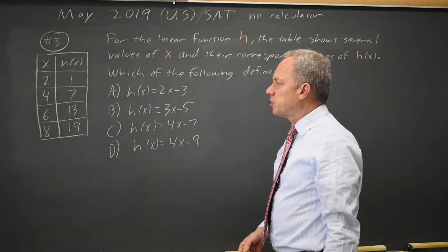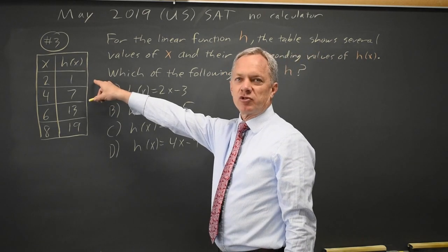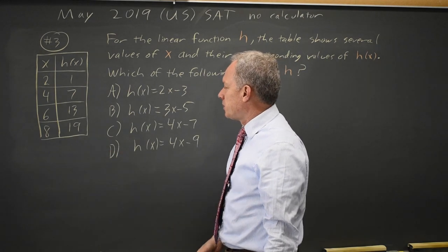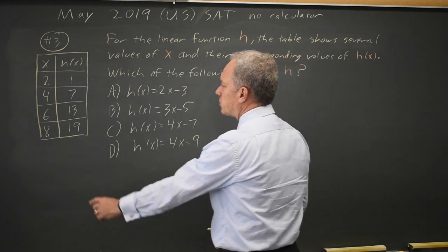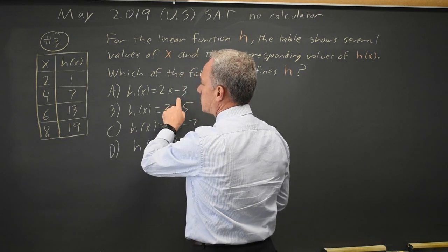Since I have choices, I'm going to try plugging in values. And since I know College Board likes to make the first point work for most of your choices, I'll usually plug in the last point. So if I try 2 times 8 is 16 minus 3 is 13,